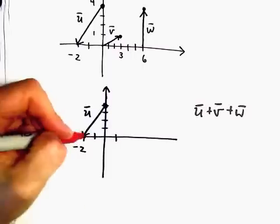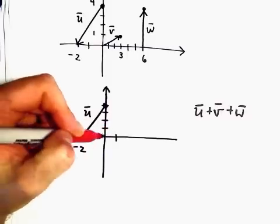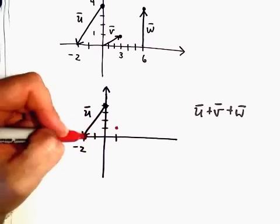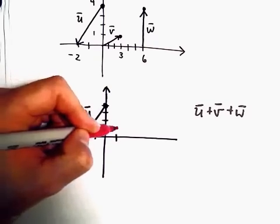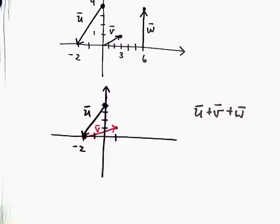So we're sitting at negative 2. That means if I go 3 units to the right and 1 unit up, I'm going to stop at the point (1, 1). So there's vector v.